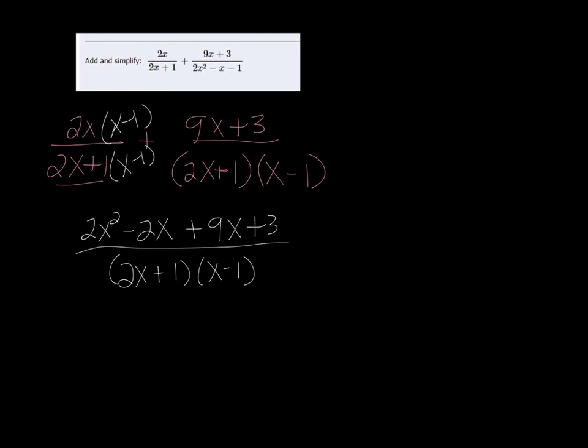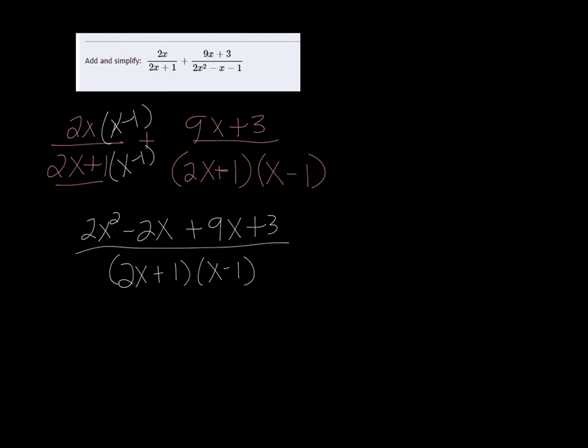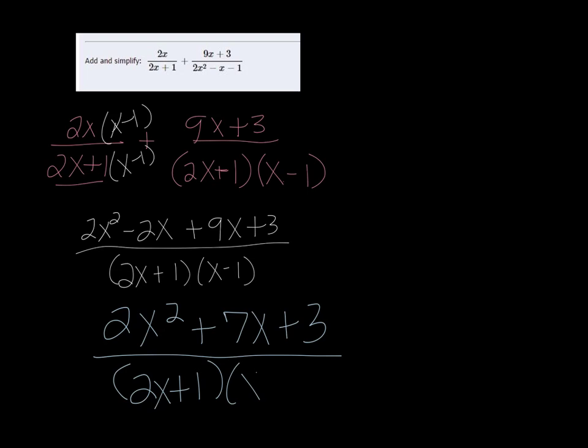We still have some work to do here. There are some like terms. So we have 2x squared plus 7x plus 3 over 2x plus 1 and x minus 1. Let's see if this is going to factor the numerator here.